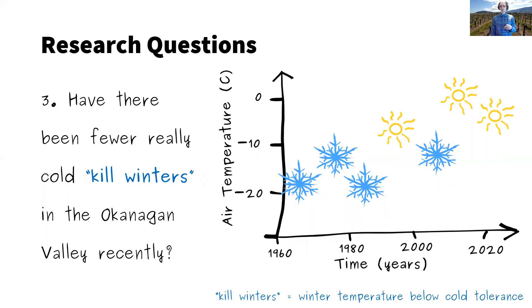And finally, we want to ask if there's been fewer kill winters, or really cold winters where the temperature drops below what the wine grapes can cope with in the Okanagan Valley recently. And does that link to cold tolerance predicted values from our model in the Okanagan?